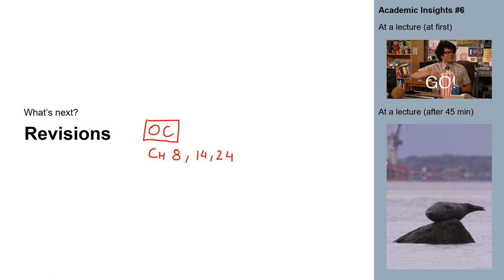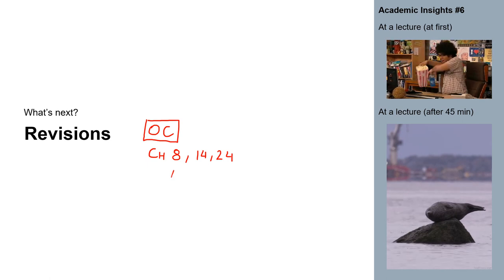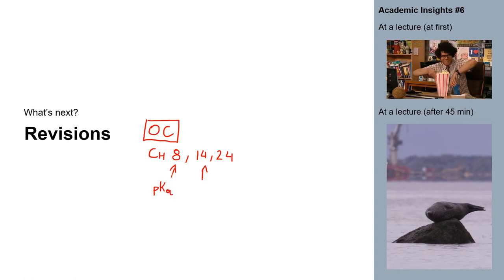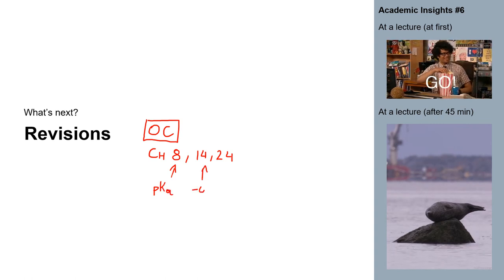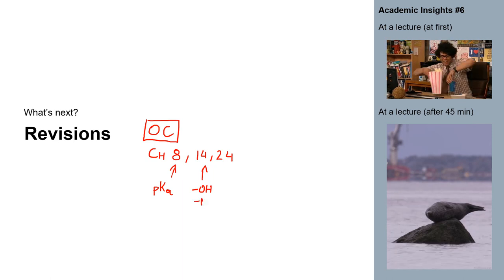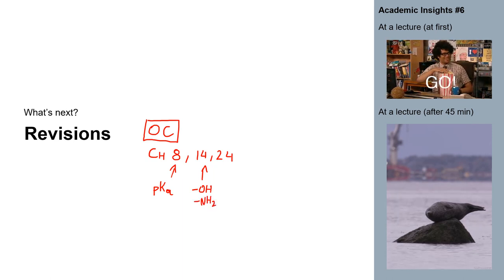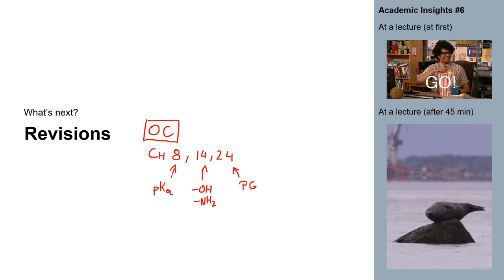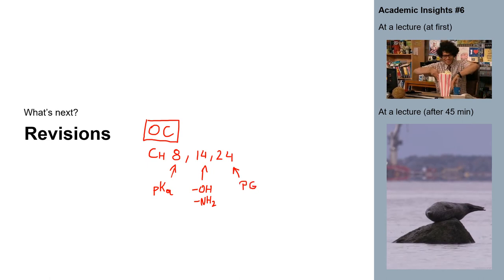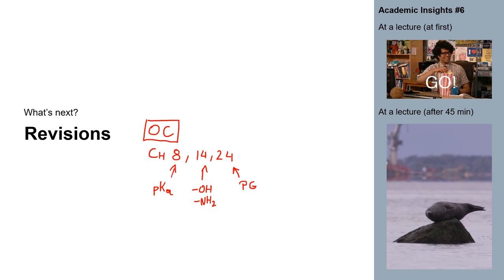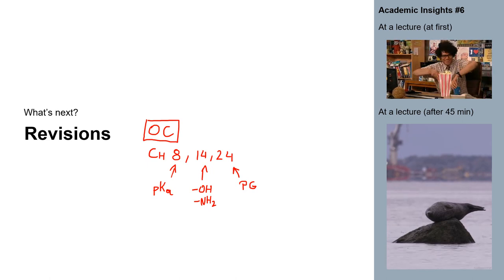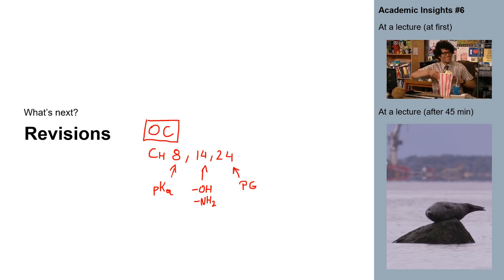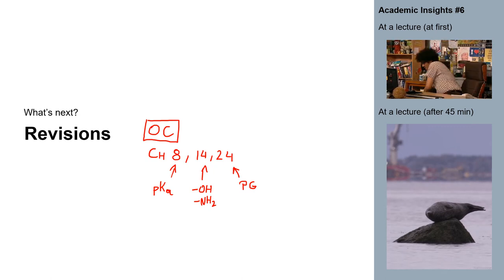A couple of chapters are of particular importance, in particular chapters 8, 14, and 24 if you would like to delve a little bit deeper into this method. So chapter 8 goes into pKa values, 14 into alcohols and amines, and chapter 24 into protecting groups. So thank you very much for your attention and hopefully see you for some more advanced chemistry, and advanced organic chemistry in particular, in the next year.